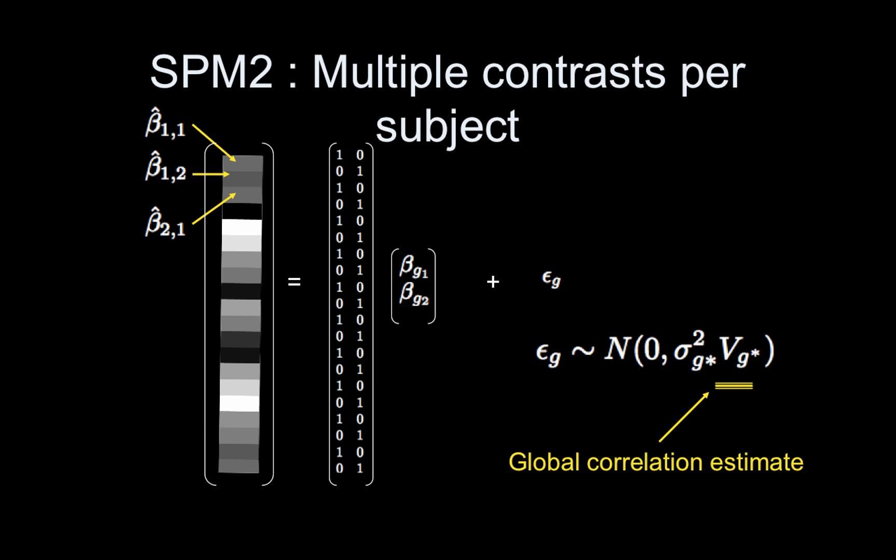I don't know if AFNI can. FSL doesn't—it assumes an identity matrix here. So that's kind of cool. It is a global estimate, just as the temporal auto-correlation estimate is global at the first level. This is global, so there are pros and cons to that.